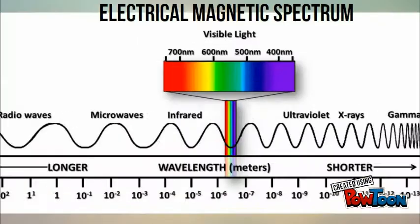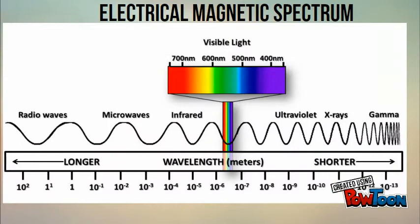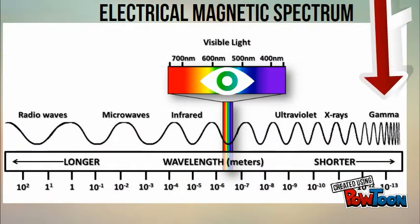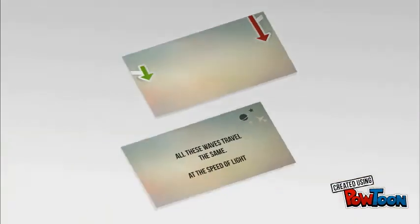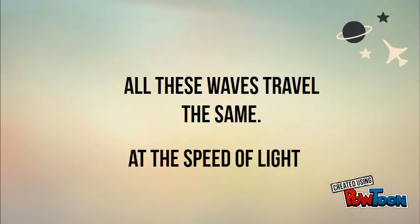Gamma rays are on the smallest end of the electromagnetic spectrum. As you can see on the right, the light we see is about the size of bacteria. Radio waves at the other end of the spectrum can be huge in size. All these waves travel at the same speed — the speed of light.